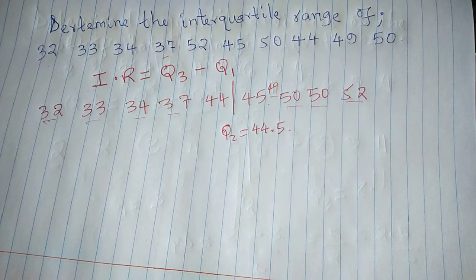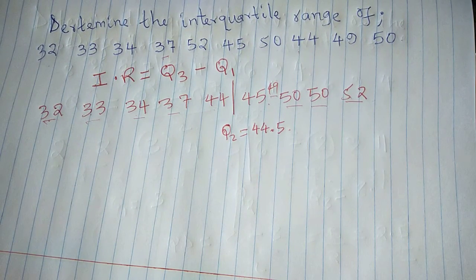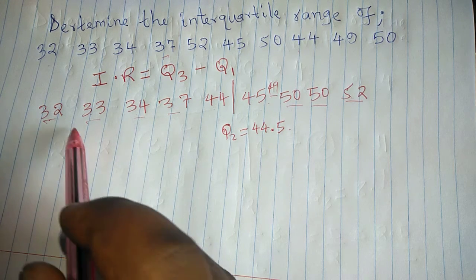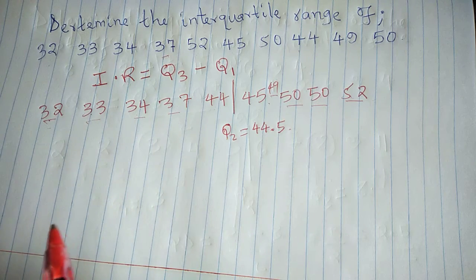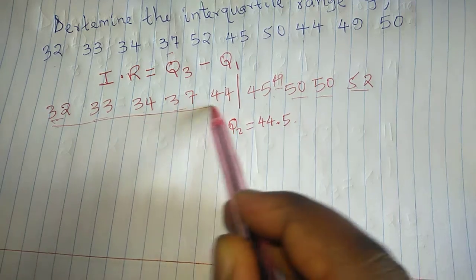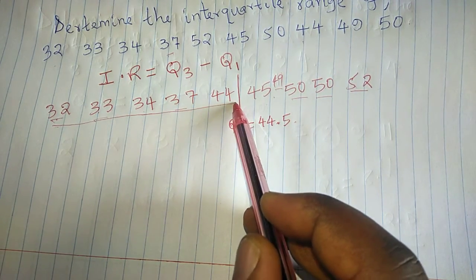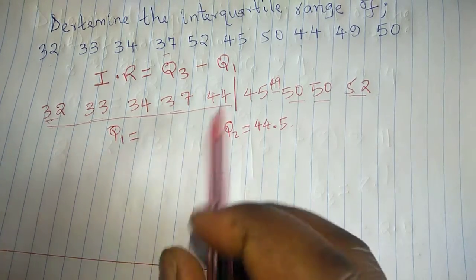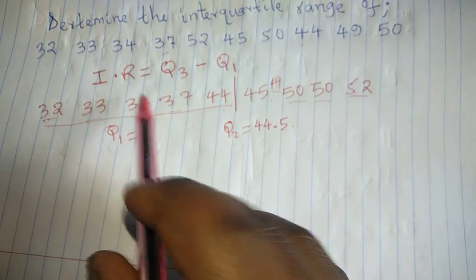Therefore, now that we have Q2, which divides the set of data into two equal portions, then we can get Q1, which is the median of the lower set of data after it has been divided by the median. Therefore, this lower set of data, its median is called Q1. And therefore, Q1 for this set of data will be 34.